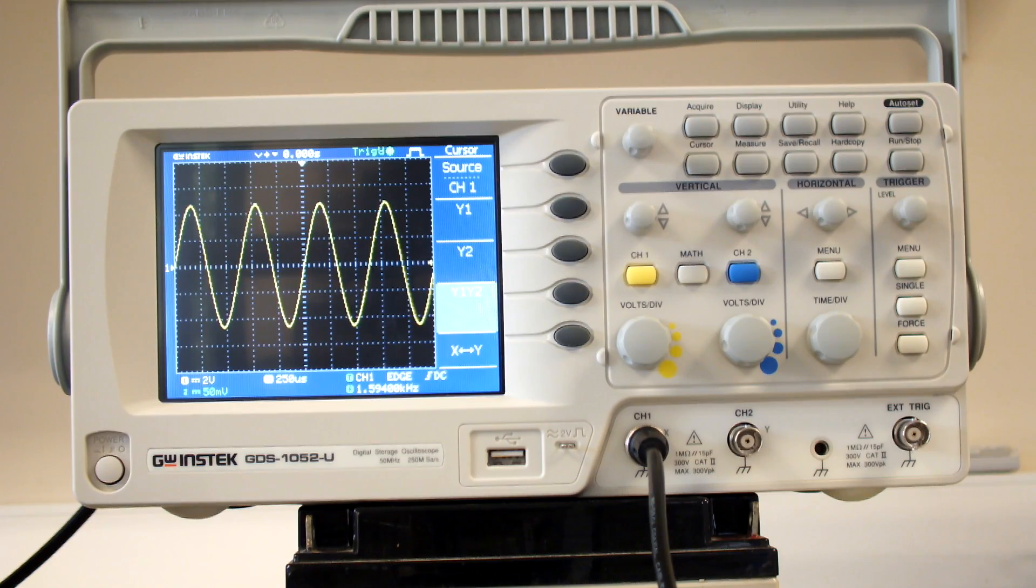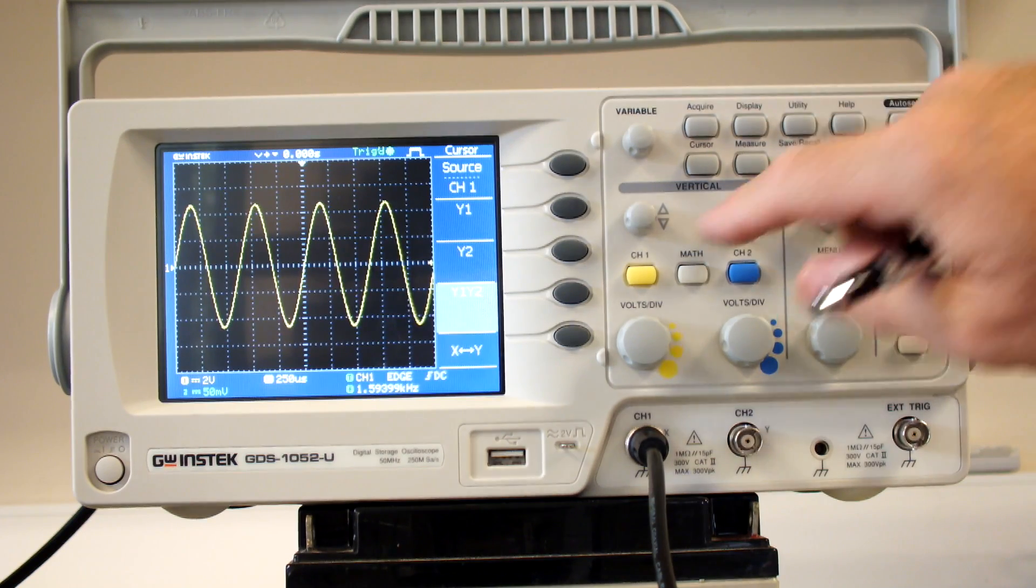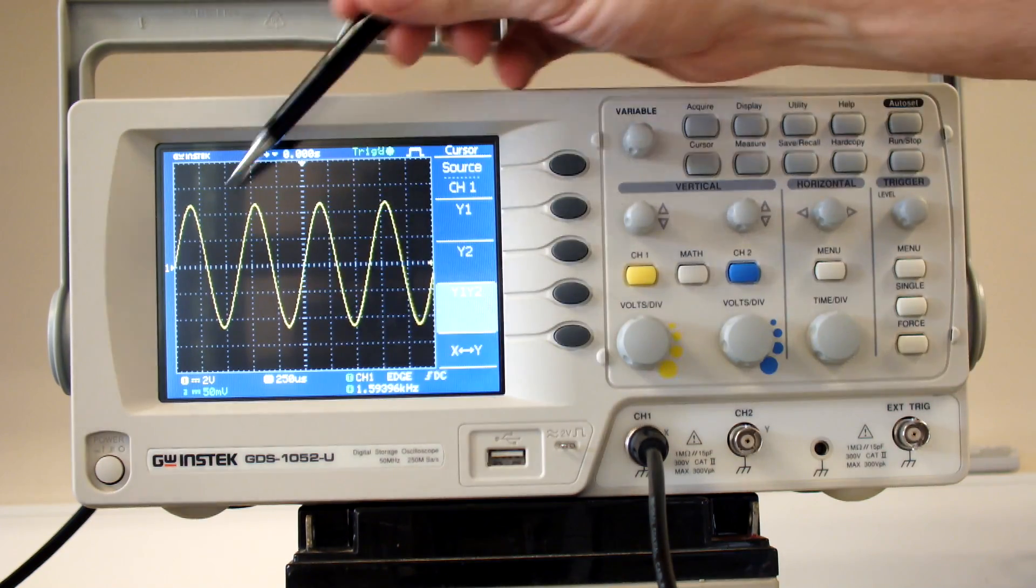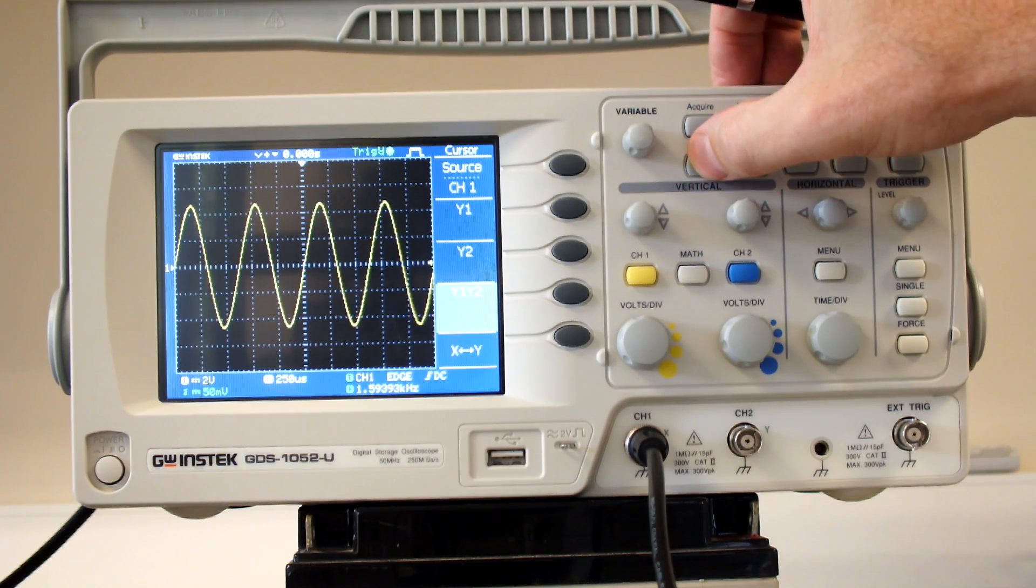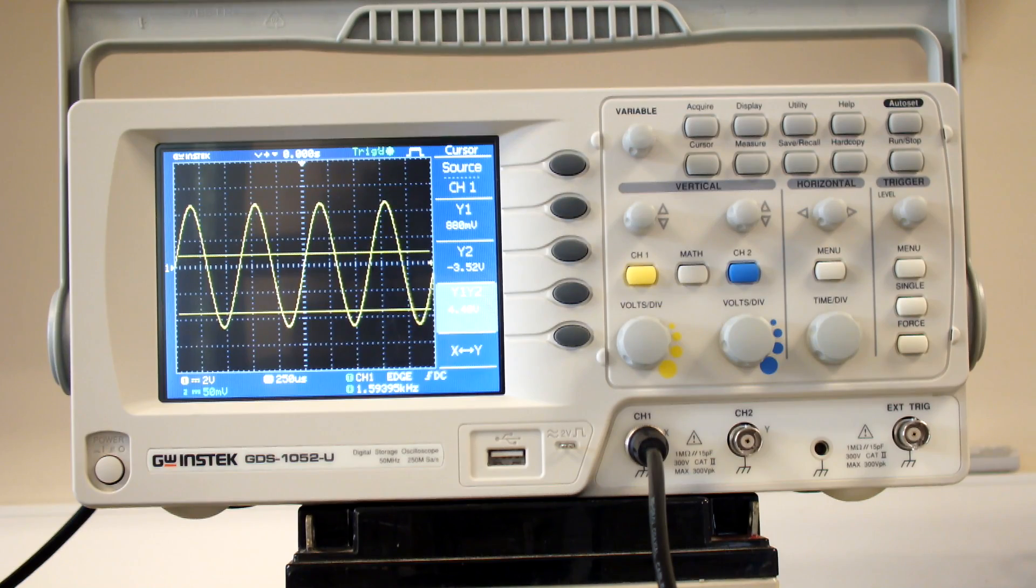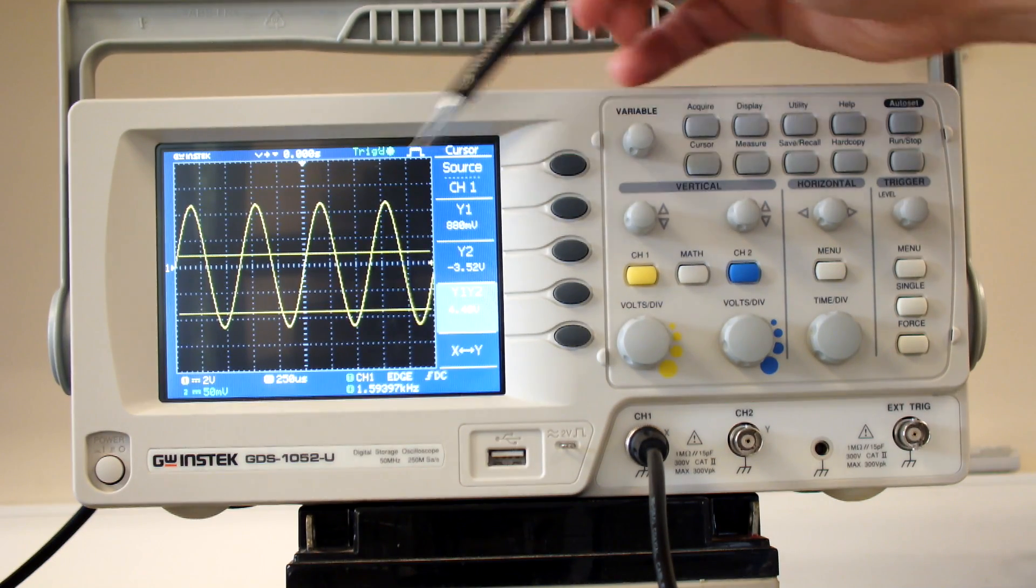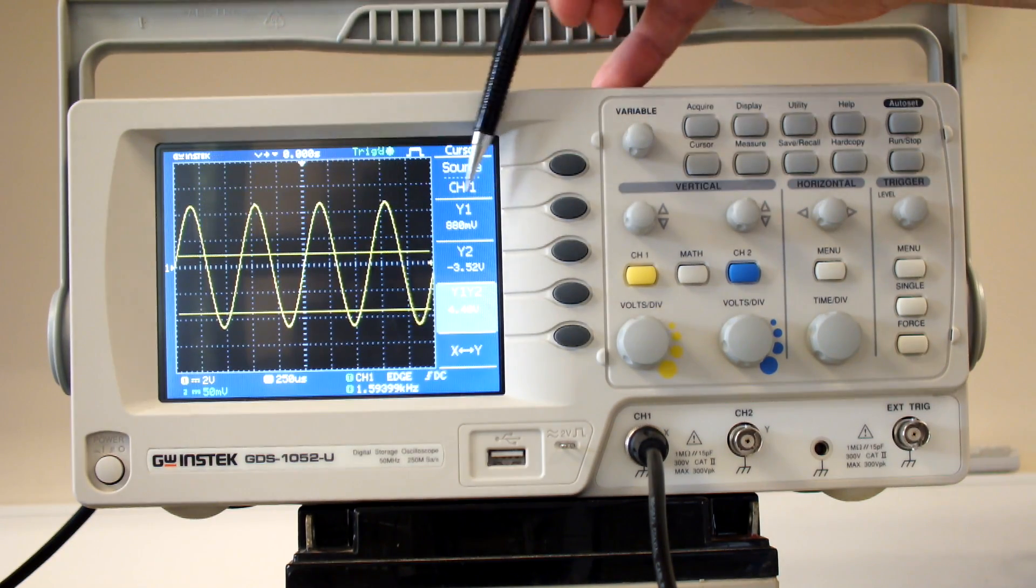So we now have a waveform. If I want to measure the waveform, I can use the cursor function. If I press cursor, it puts a line up here on the Y-axis.